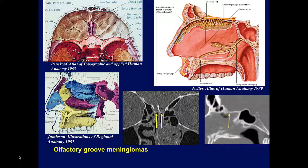Let's review the anatomy of the floor of the anterior fossa. Looking from above, we see the frontal bone forming the roof of the orbit. Centrally we focus on the cribriform plate and crista galli, which is part of the ethmoid. Behind that is the sphenoid bone with the lesser wing, the planum sphenoidale in the center, the optic canals, anterior clinoids, and the tuberculum sellae along the floor.